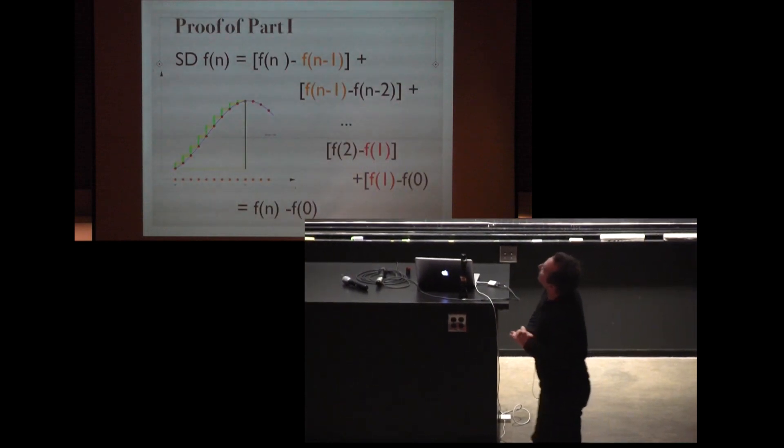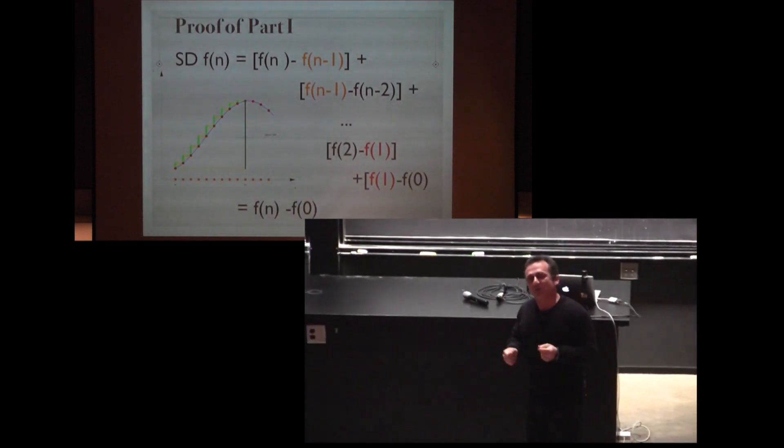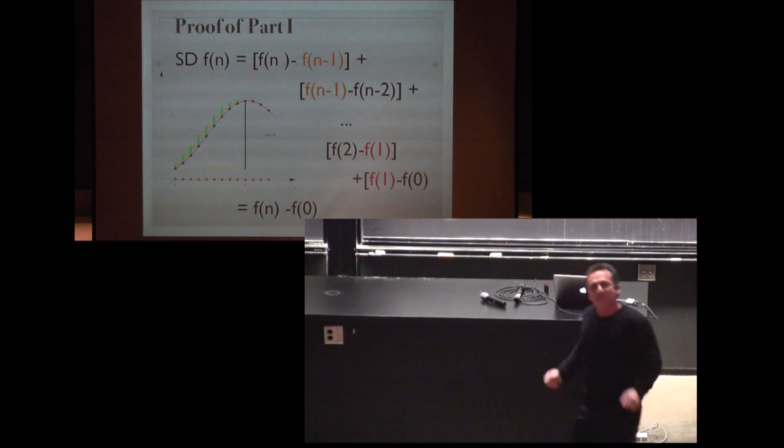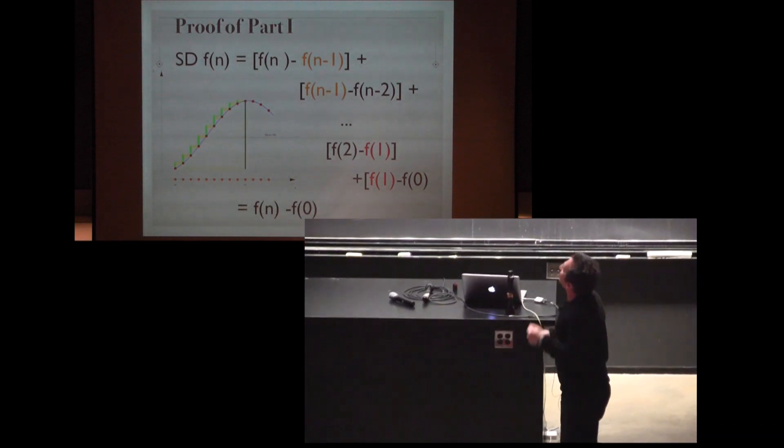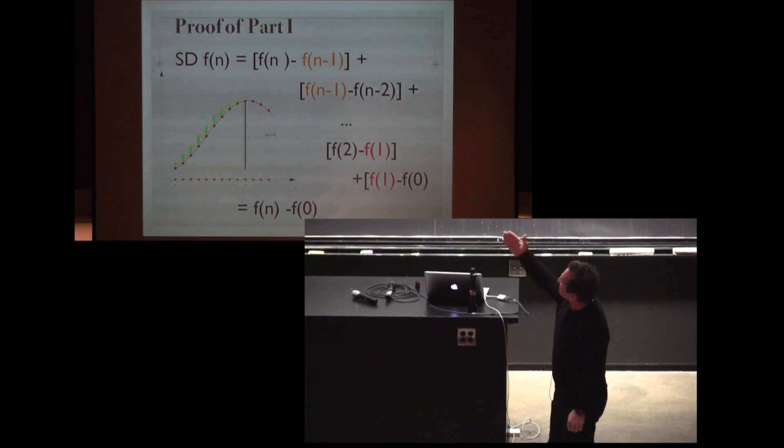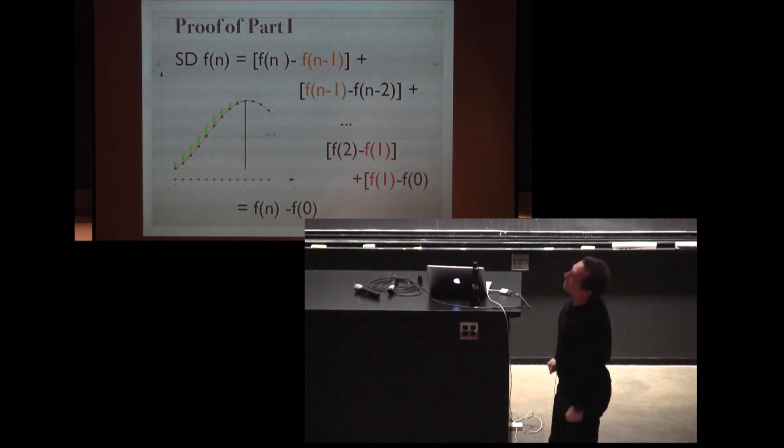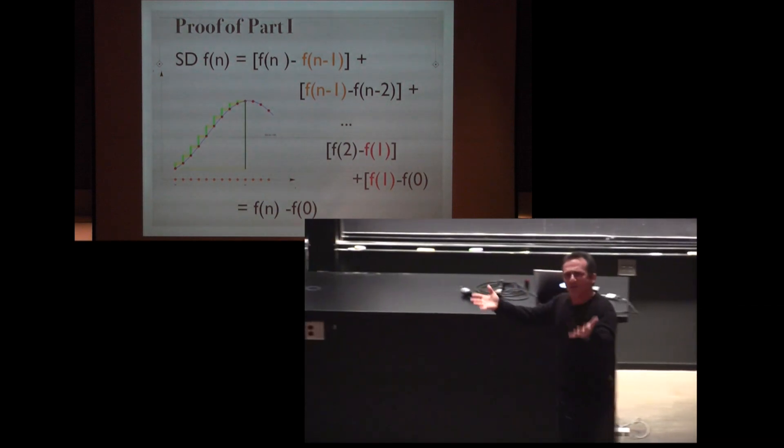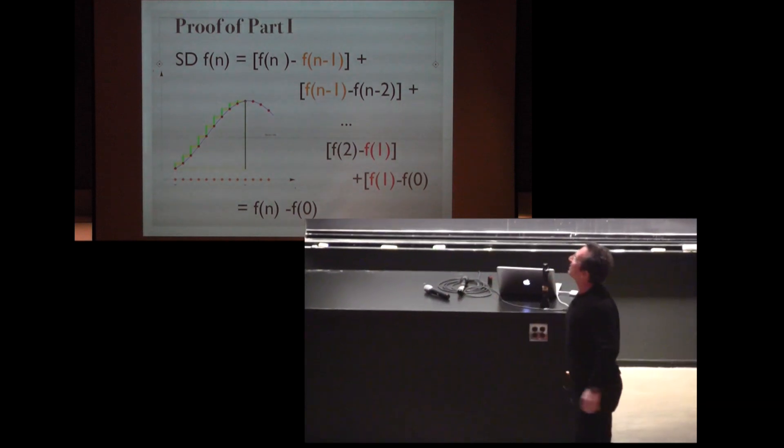And here is the proof of the first result. We take the sum of the differences and you see that the middle terms cancel away. This is a telescopic sum and only the boundary terms survive and we have fn minus f0. Very important principle which goes to multivariable calculus, differential geometry, is cancellation.